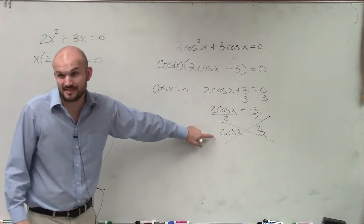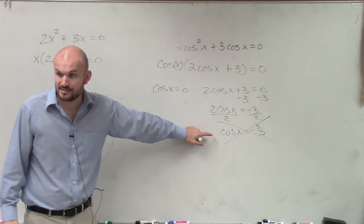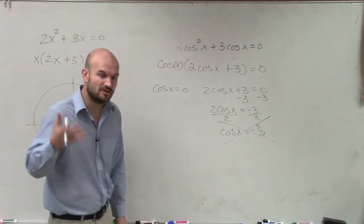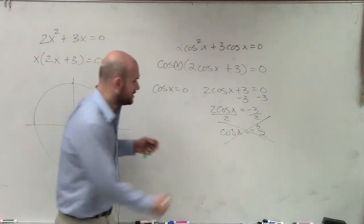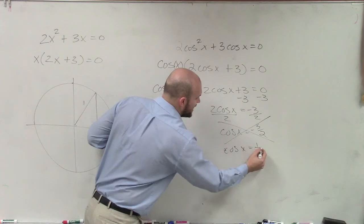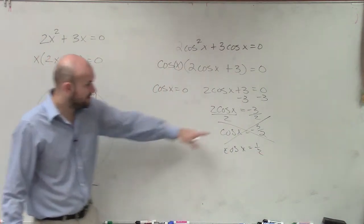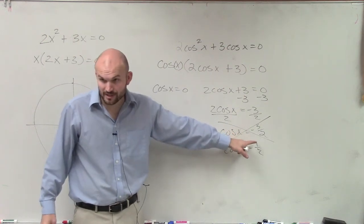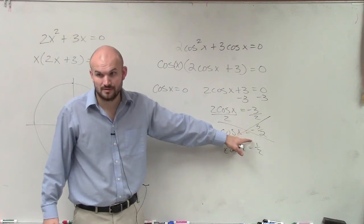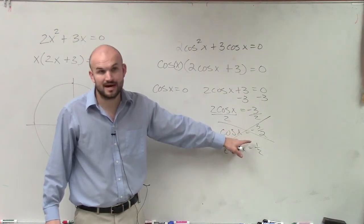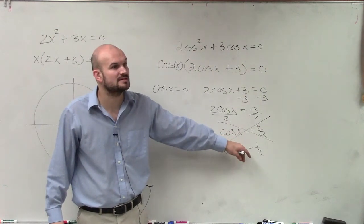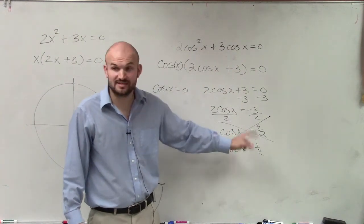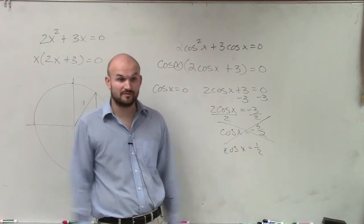That one does not exist — it's not within our domain. I'll talk more about this next class period. But remember, if it were cosine of x equals 1 half, you'd know where that point is. But negative 3 halves is not on the unit circle. There is no x-coordinate on the unit circle equal to negative 3 over 2. You cannot evaluate it. If it were negative square root of 3 over 2, then yes, that's a valid point — but it's negative 3 over 2, so we can't do anything with it.